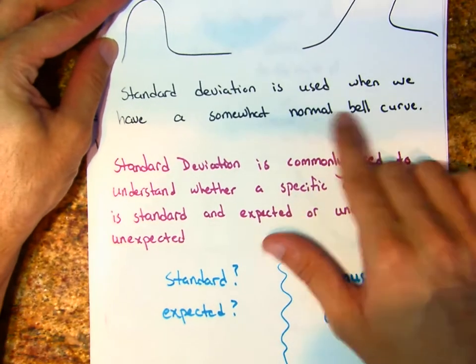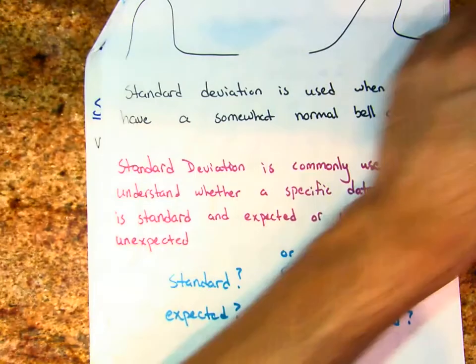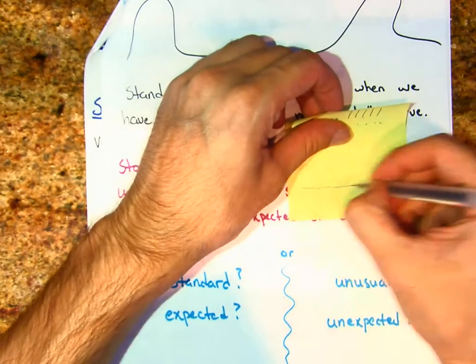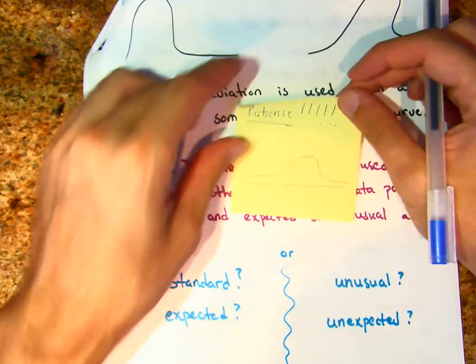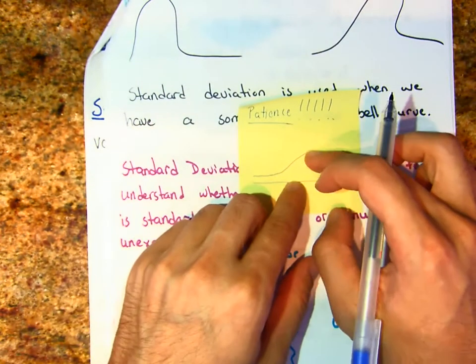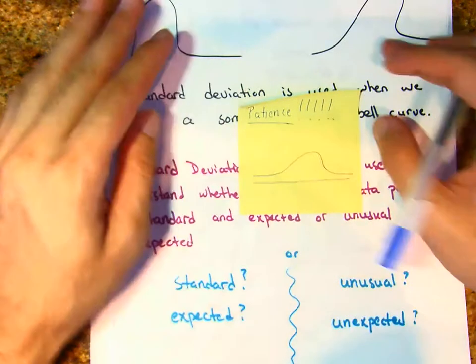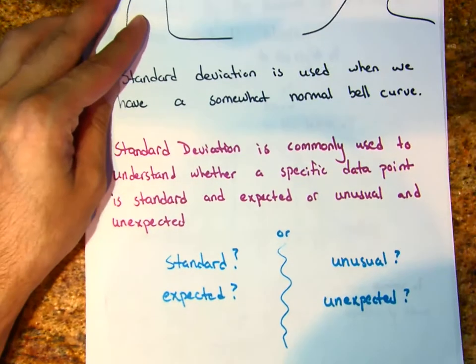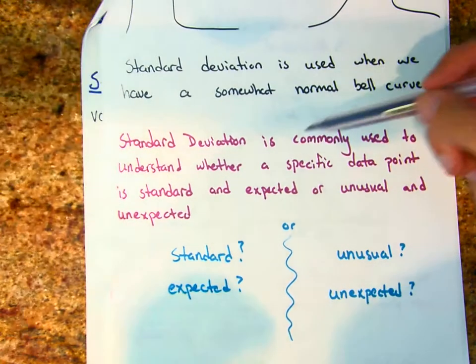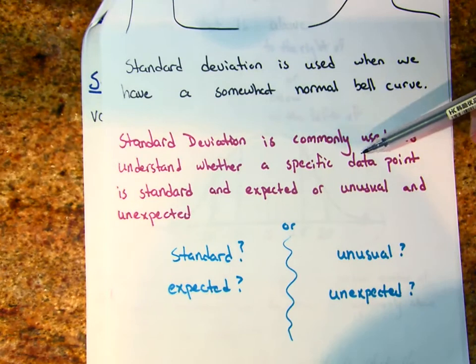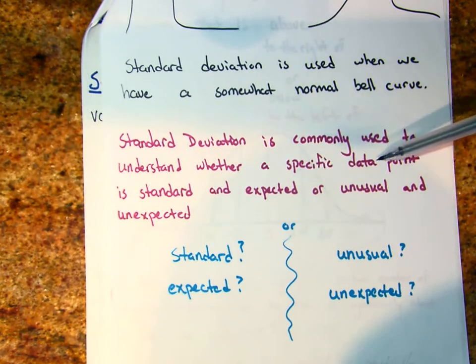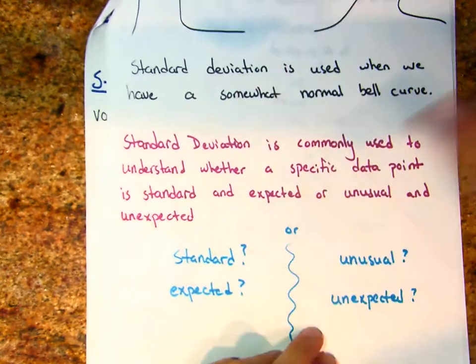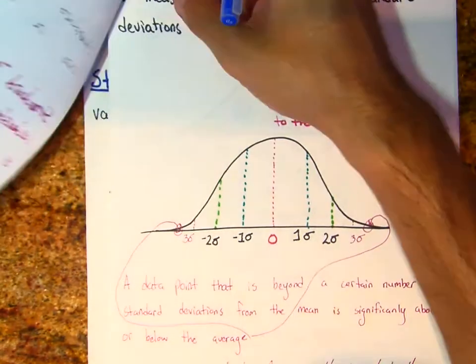Standard deviation is used when you have somewhat of a normal bell curve — where data values have some sort of mean in the center and everything looks nice and symmetric. Standard deviation is commonly used to understand whether a specific data point is standard and expected, or unusual and unexpected.